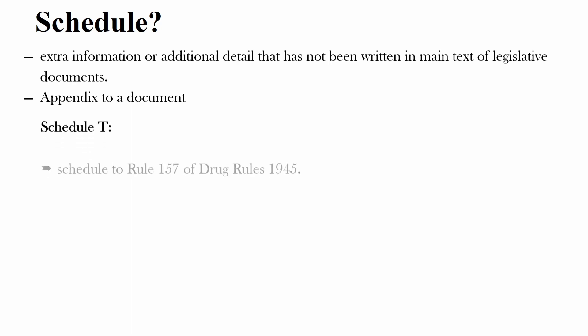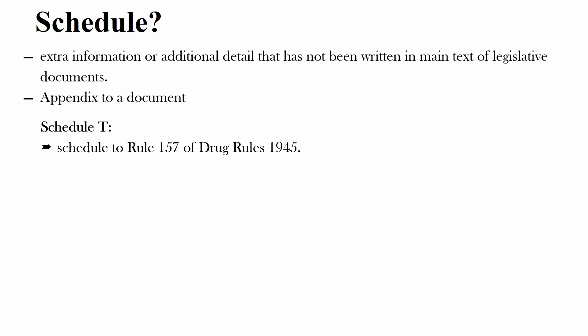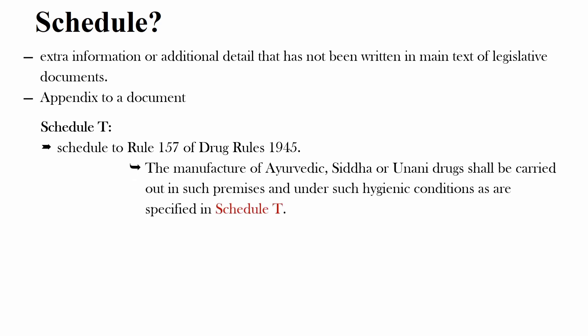Coming to Schedule T. Schedule T is the schedule to Rule 157 of Drug Rule 1945. Rule 157 says the manufacture of Ayurvedic, Siddha or Yunani drugs shall be carried out in such premises and under such hygienic conditions as are specified in Schedule T. This means Schedule T is the mandatory requirement for the manufacture of Ayurveda, Siddha and Yunani drugs.